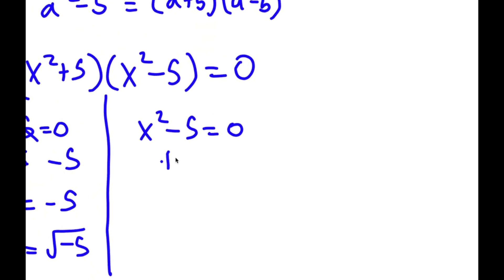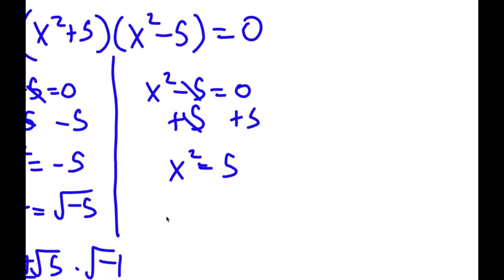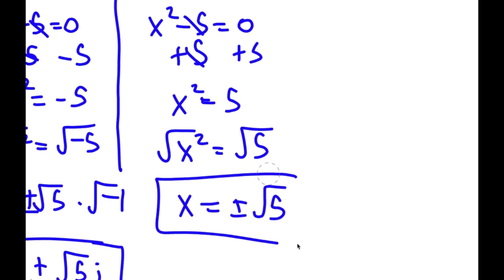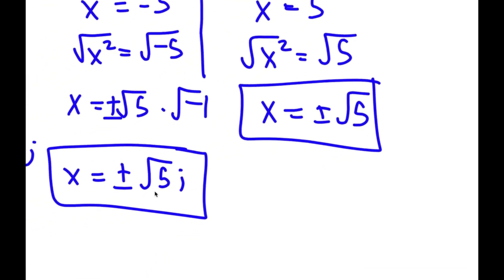For x squared minus 5 equals 0, I add 5 on both sides to get x squared equals 5. Taking the square root on both sides gives x equals positive or negative square root of 5. So these are two more solutions, giving me four solutions total.